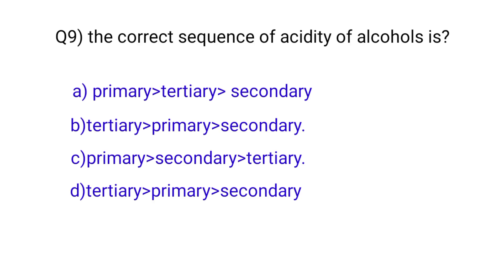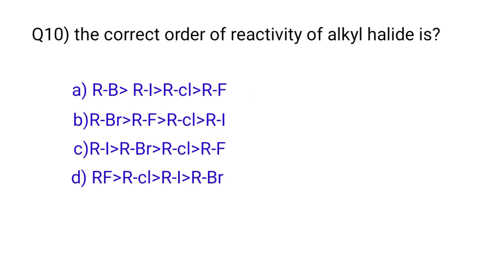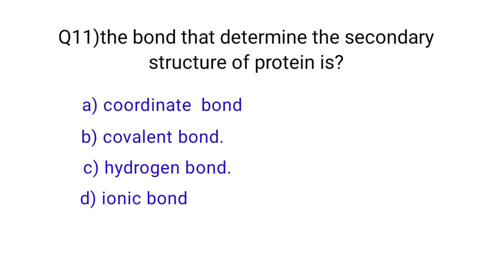Question number nine: the correct sequence of acidity of alcohols is? The correct answer is option C: primary, secondary, and tertiary. Question number ten: the correct order of reactivity of alcohols is? The correct option is C.